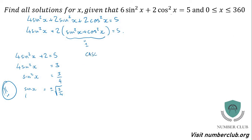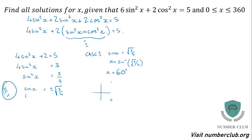Case 1: sine of x equals root 3 quarters, which means x equals inverse sine of root 3 quarters. Use the fraction button — inverse sine of 3 quarters gives 60 degrees. Casting: sine is positive in the first and second quadrants — so we've got 60 there and 180 take away 60, which is 120. So case 1 gives x equals 60 and x equals 120 degrees.